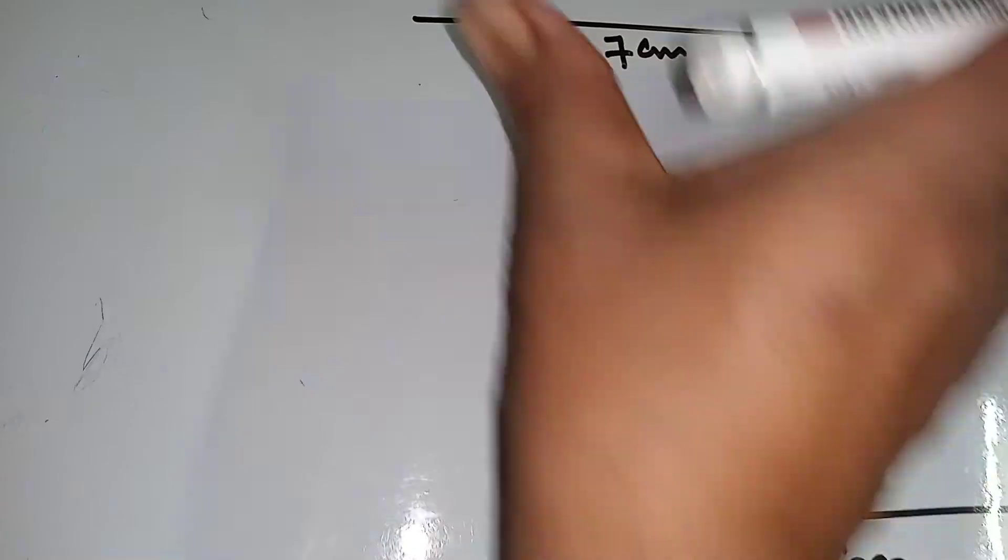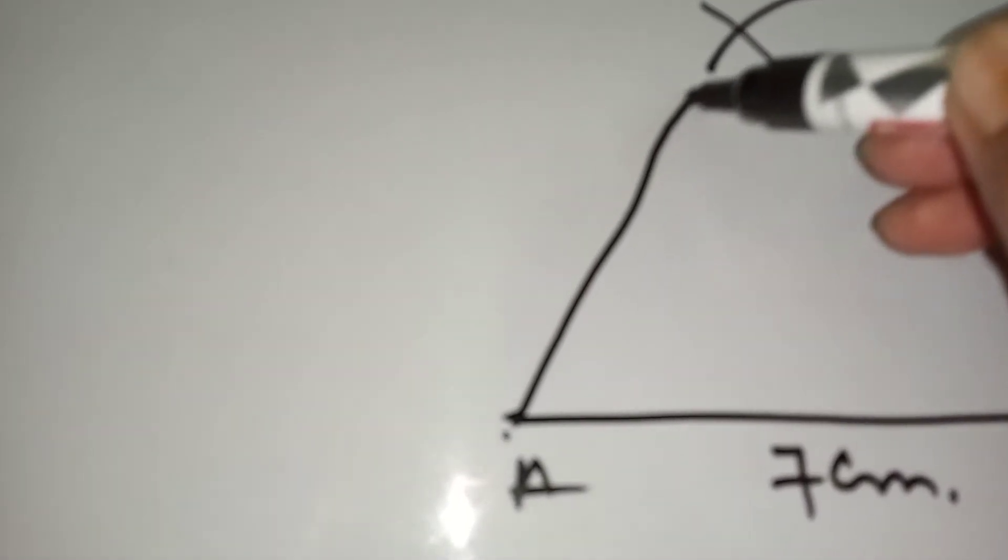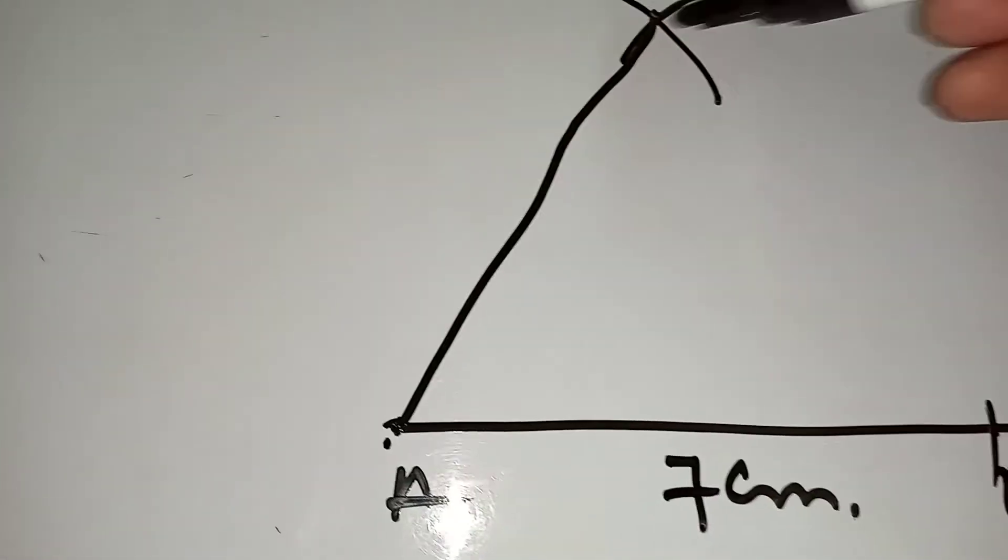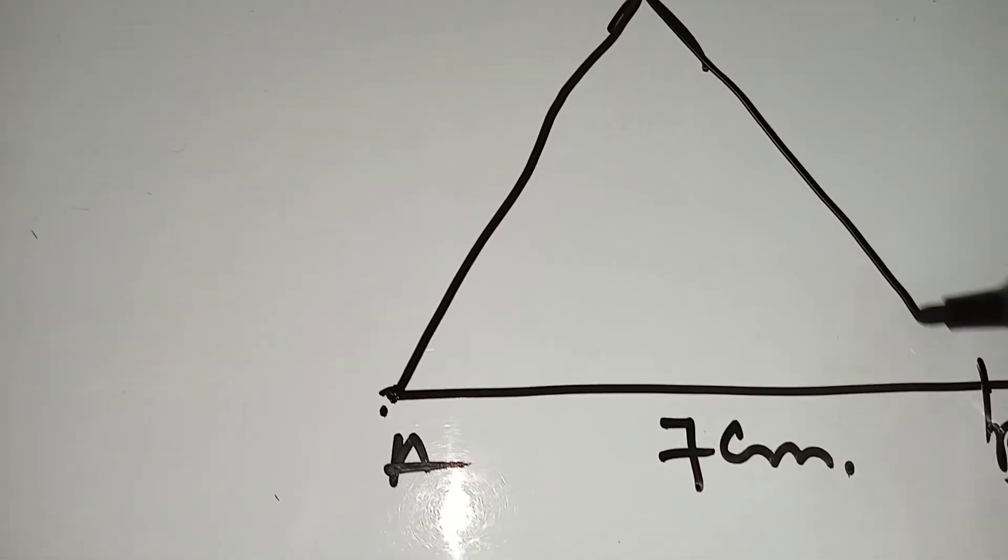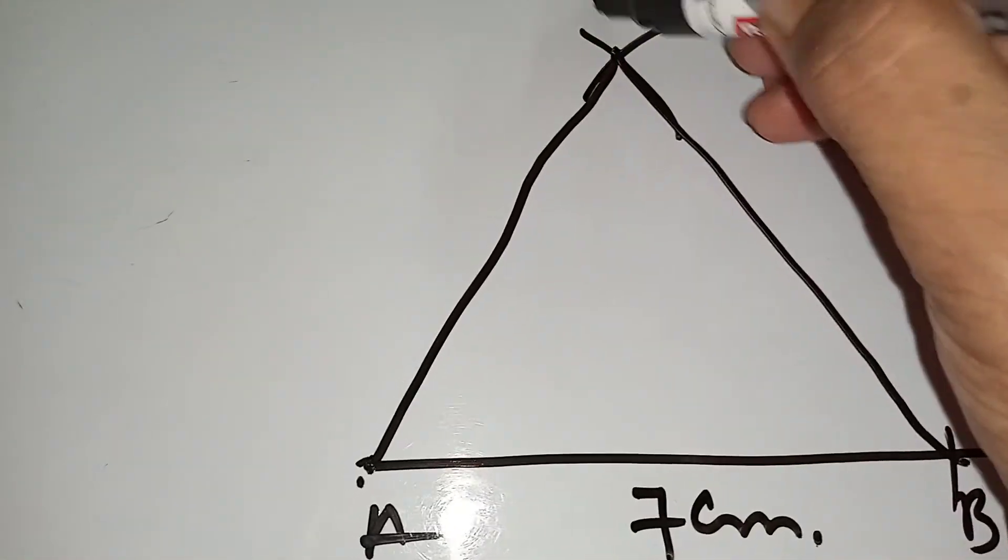Now take the measure of six centimeters, put here, draw one arc. Again, take the arc of length five centimeters, put here and draw another arc. Now join these points. This is D.